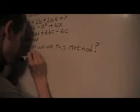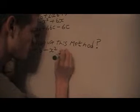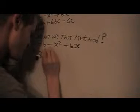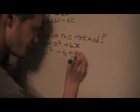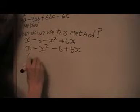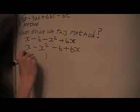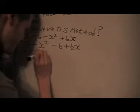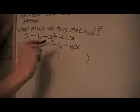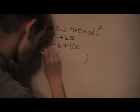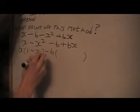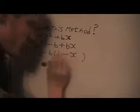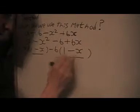Now let's look at the second example: x - b - x² + bx. We'll rearrange it again. We can factor out an x from the first pair, giving x(1 - x), and from the second pair we factor out -b, giving -b(1 - x). These give the same common bracket (1 - x).